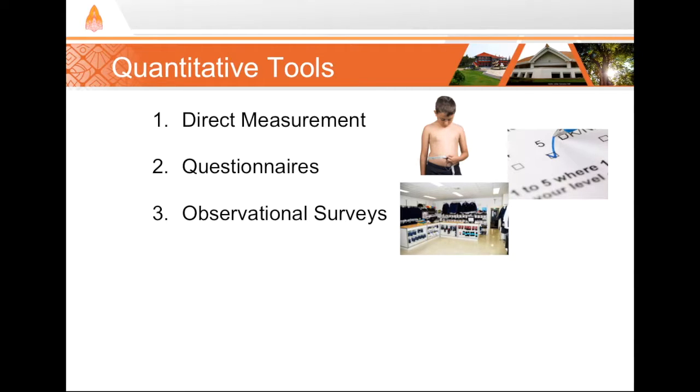Thirdly, we could use observational surveys. In this case, an observational survey might take the form of going around and seeing what size pants the children are wearing, or it could take the form of sitting at the school uniform sales shop and recording what size pants children are buying. In either case, we are not directly measuring our variable, waist circumference, but observing, without interfering, some representative variable, in this case, pants size. We believe pants size correlates well with waist circumference.